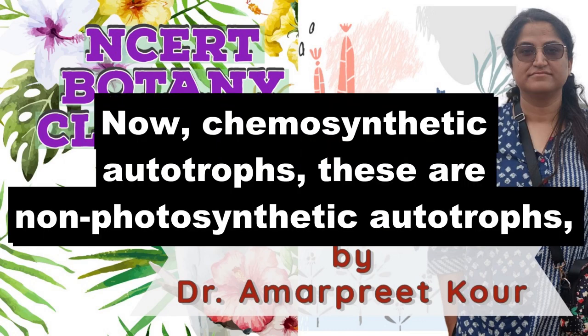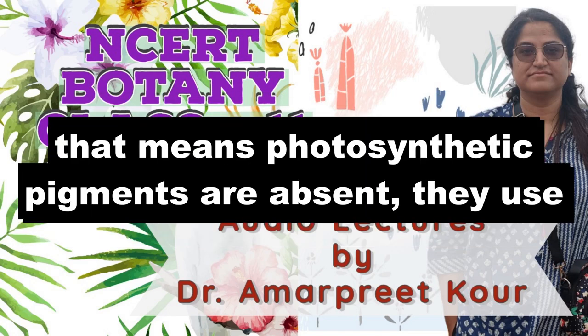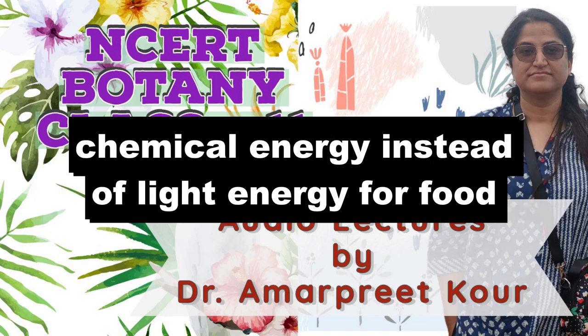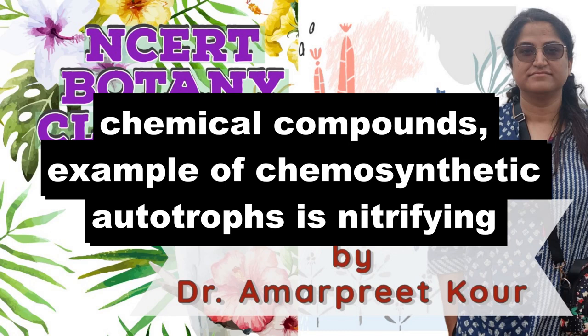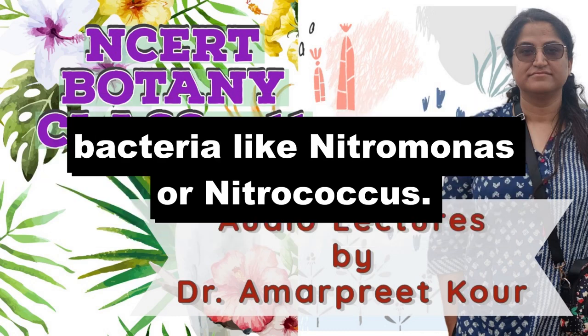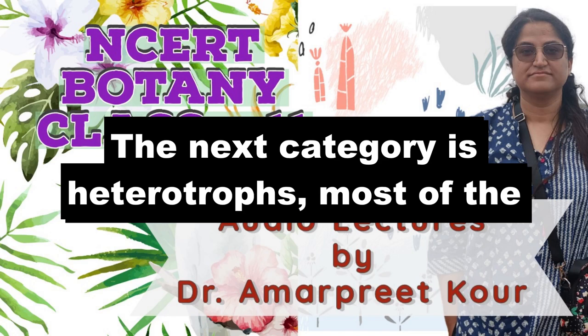Now, chemosynthetic autotrophs. These are non-photosynthetic autotrophs, meaning photosynthetic pigments are absent. They use chemical energy instead of light energy for food synthesis. Chemical energy is obtained from oxidation of chemical compounds. Examples of chemosynthetic autotrophs are nitrifying bacteria like Nitromonas or Nitrococcus.